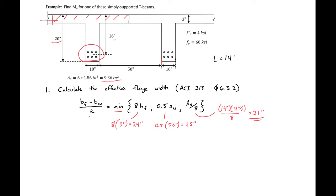Now we can solve for b sub f. We'll get b sub f equal to 2 times 21 inches plus our bw which is 10 inches. So we'll get an overall b sub f equal to 52 inches. This will be our flange width moving forward in this example.